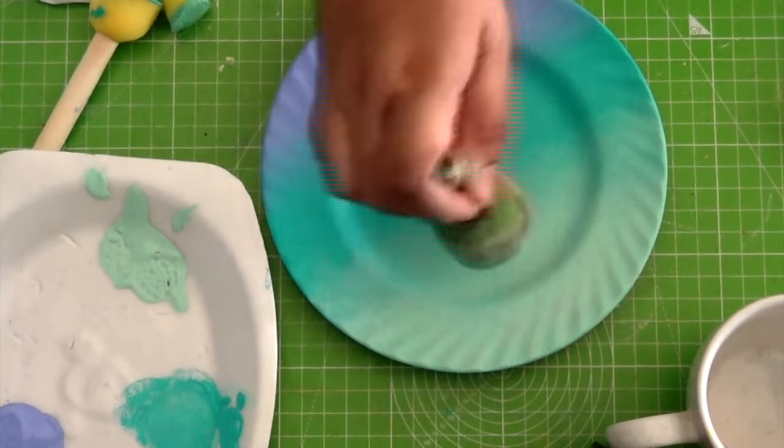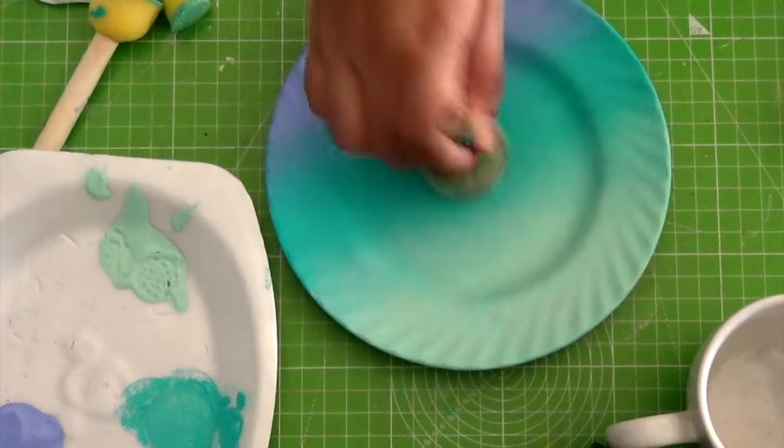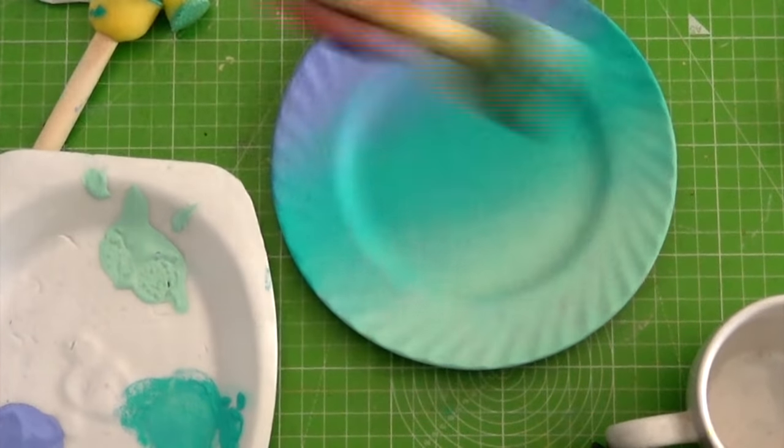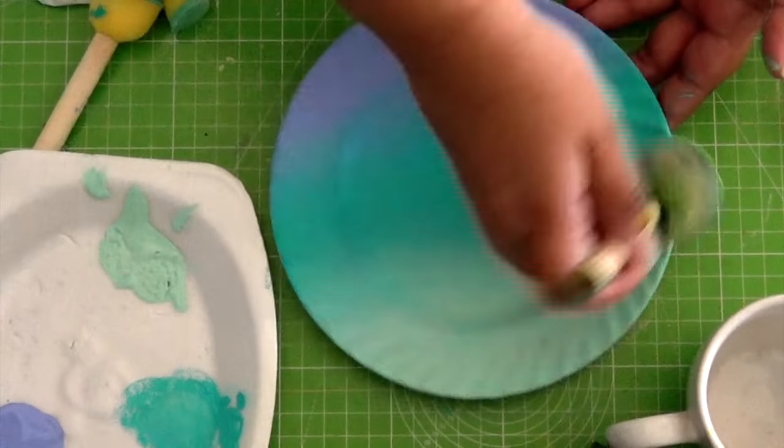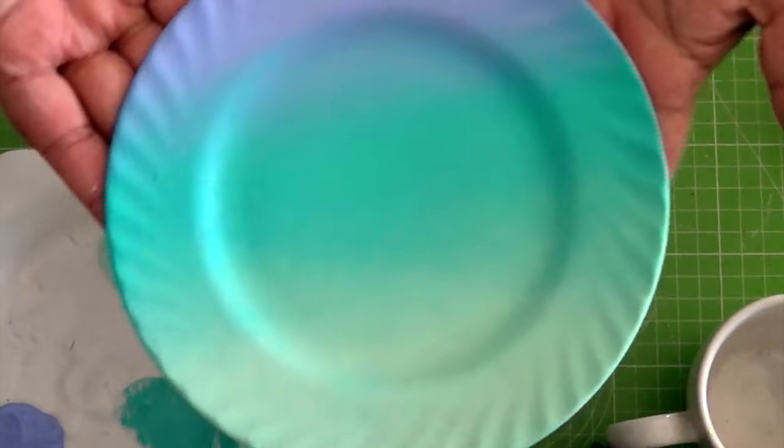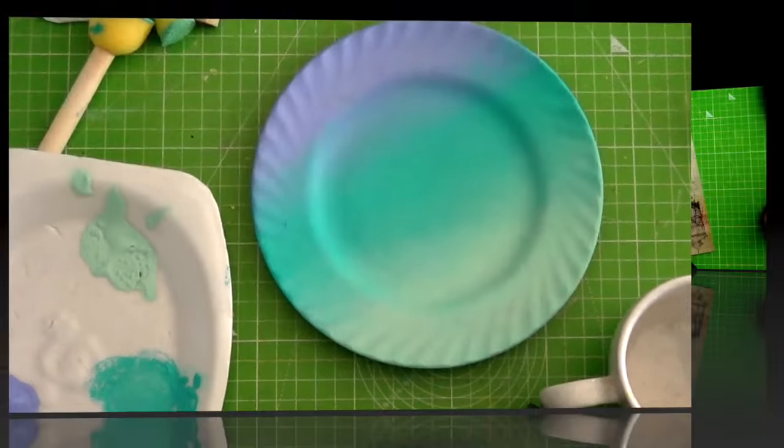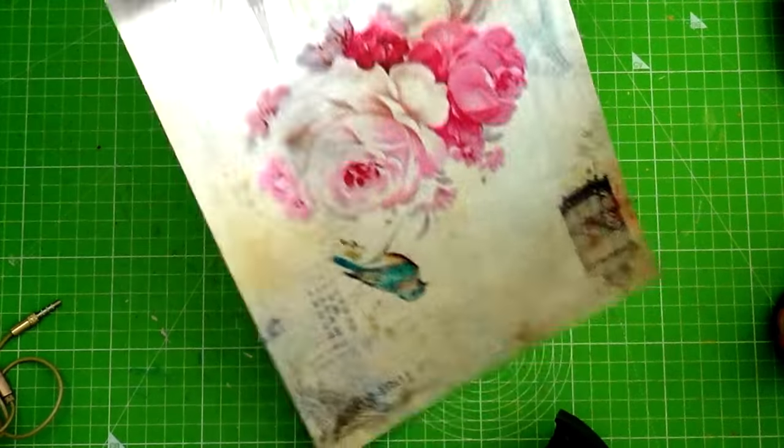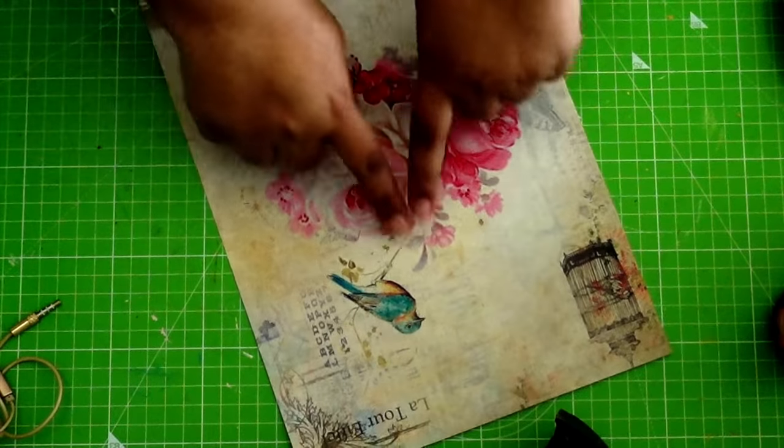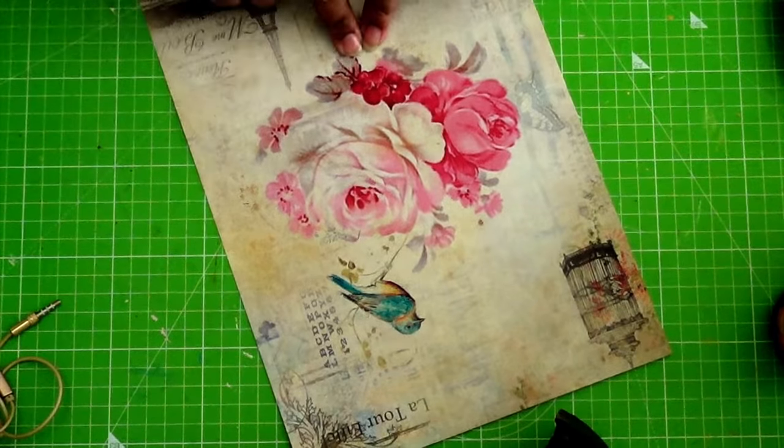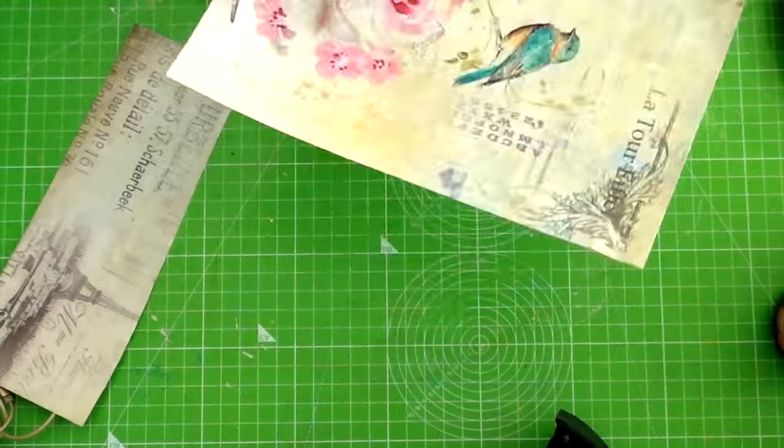For the last step, just before you let the plate dry, take a fresh dry sponge and dab it all over the plate to further blend the paint and give it a more fuzzy, dreamy effect. This is the decoupage paper we will be using today, and we'll be cutting out only the rose motifs from the paper.